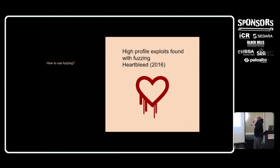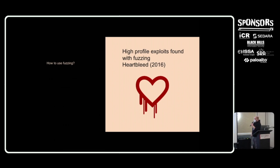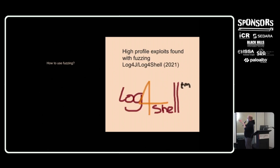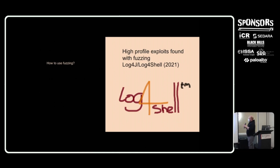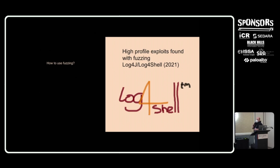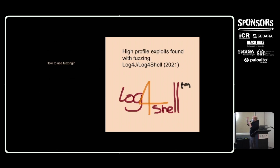A couple of high-profile bugs were found — or can be found — using fuzzing. Heartbleed in 2016: a cryptographic bug in the OpenSSL library, a huge vulnerability, which can be pretty effectively found with fuzzing. And Log4Shell, now two years ago — the Log4J exploit. You can use fuzzing to find Log4J exploits. Even your smart light bulbs might be susceptible to this. These are two very high-profile exploits that both can be found using fuzzing.